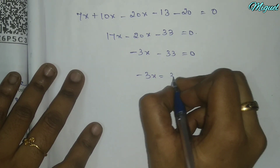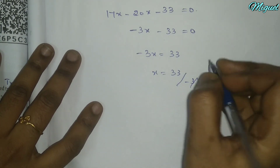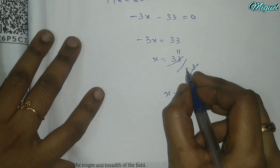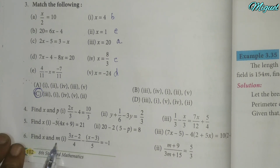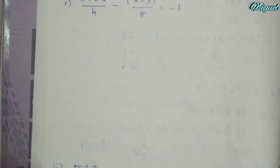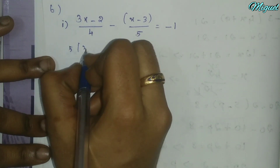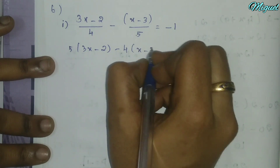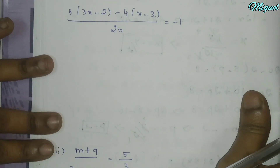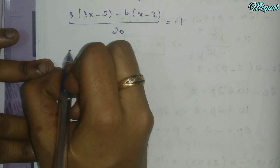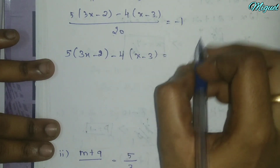Minus 3x equals 33. So x equals minus 11. Next: 5(3x minus 2) minus 4(x minus 3) equals minus 20.